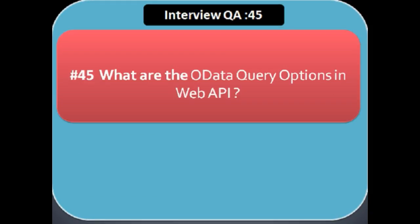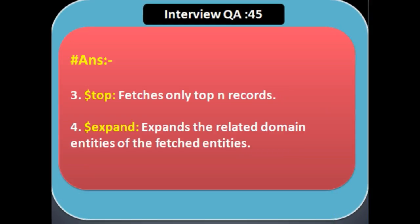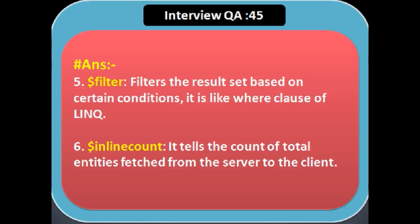What are the OData query options in Web API? First, $select — selects the columns or properties in the result set, specifying which attributes to include. Second, $orderby — sorts records in ascending or descending order. Third, $top — fetches only the top N records. Fourth, $expand — expands the related domain entities. Fifth, $filter — filters the result set based on conditions, like a WHERE clause. Sixth, $inlinecount — mostly used for pagination, it tells the count of total entities returned from the server.